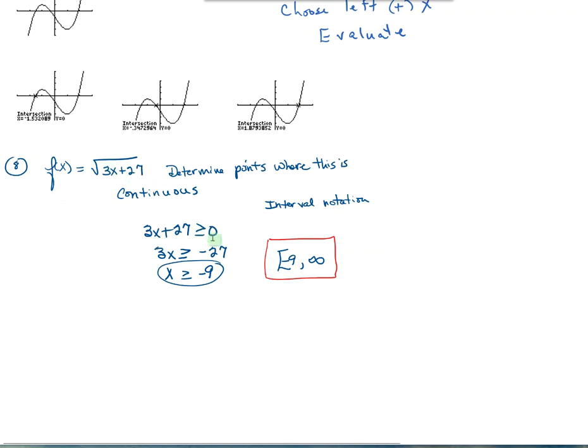That means our x is going to have to be greater than or equal to negative nine. In interval notation, that says from negative nine, bracket, from negative nine to infinity with negative nine being included. And those are the points where this would be continuous, this thing. And I think that will get it for 2.5.